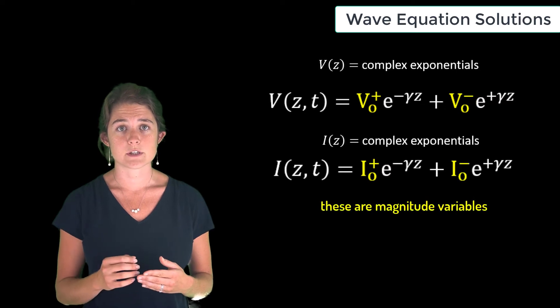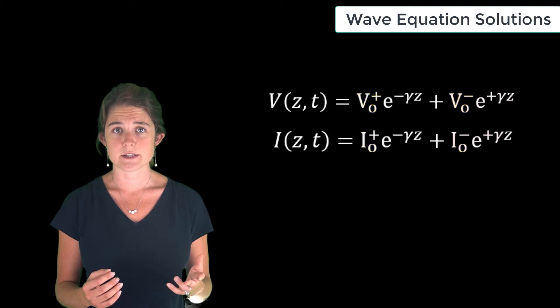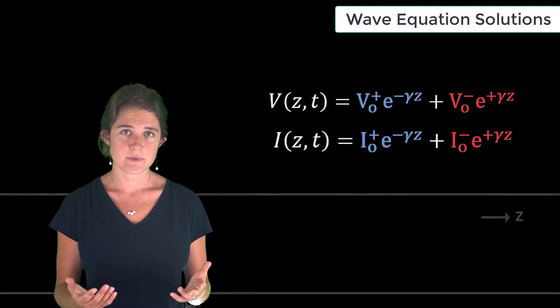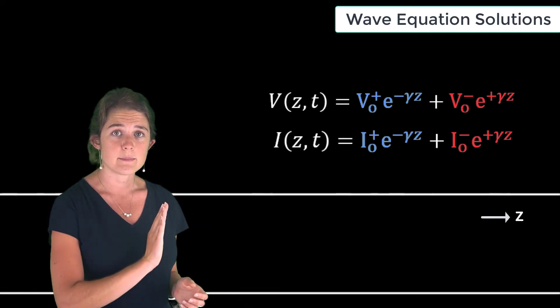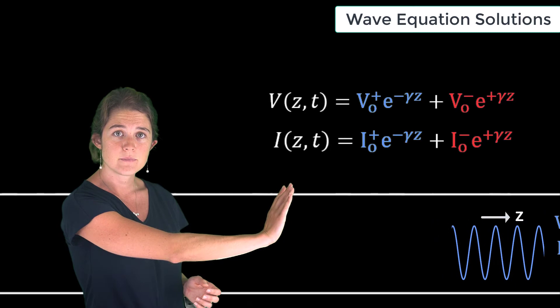on the line. It's possible for a signal to propagate in the forward direction, or the plus z direction. For the voltage, this signal is signified by this term: V₀⁺ times e to the negative γz. It's